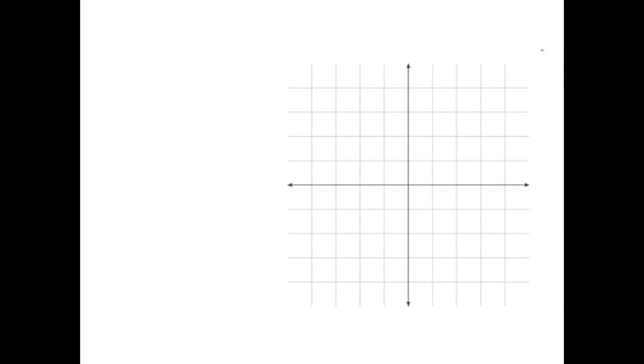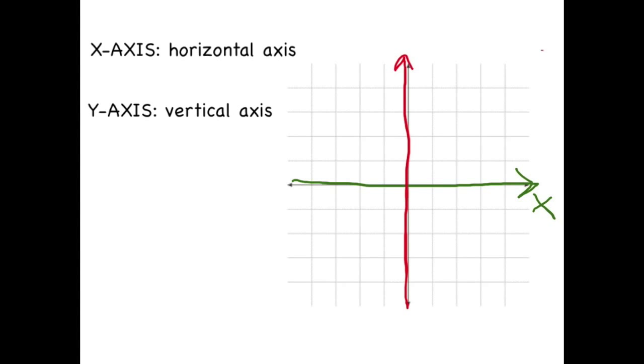This is the Cartesian coordinate plane. It has two axes. The horizontal axis is known as the X axis. The vertical axis is known as the Y axis.